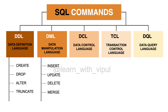The third category is DCL — DCL stands for Data Control Language. The SQL commands that we use to manage user access come under DCL. There are two types of DCL commands. The first one is GRANT: if you want to grant access of a particular table or a view to a new user, you can use the GRANT command. Similarly, if you want to revoke the access of a particular user to a specific table or view, then you can use the REVOKE command.